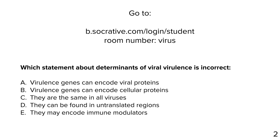Quiz question: which statement about determinants of viral virulence is wrong? Options: virulence genes can encode viral proteins; virulence genes can encode cellular proteins; they are the same in all viruses; they can be found in untranslated regions; they may encode immune modulators. The answer is C — they're not the same in all viruses. If they were, we could just find one and our work would be done. Virulence genes can encode cellular proteins — miR-122 is a cellular element, and there are other examples as well.